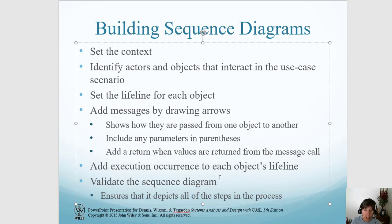Then you add the execution occurrence so that it shows on each object's lifeline when it's interacting. Then the final thing is to validate the sequence diagram - here you verify that all the steps in the process have been included in the sequence diagram. That's an overview of sequence diagrams. We're going to come back and show each of these steps individually.